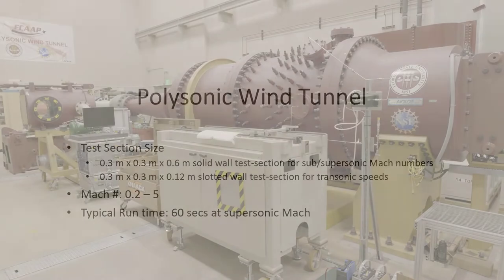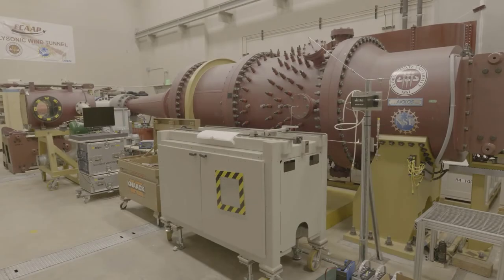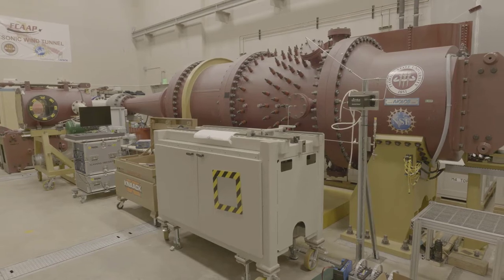The polysonic wind tunnel is an intermittent blowdown tunnel with a Mach number range of 0.2 to 5 and a test section size of 12 inch by 12 inch. The polysonic wind tunnel is capable of achieving a wide range of Reynolds numbers.